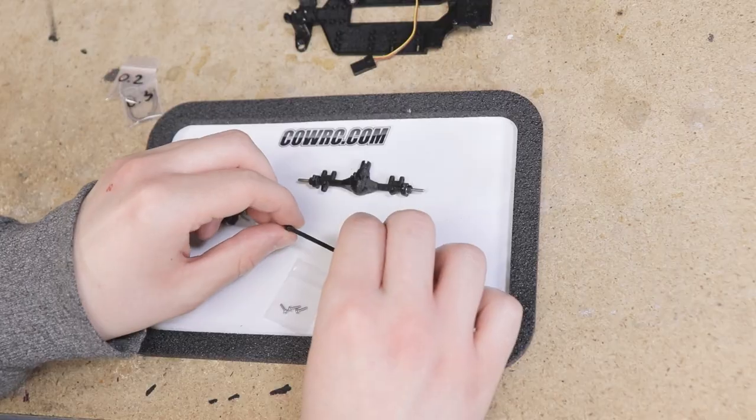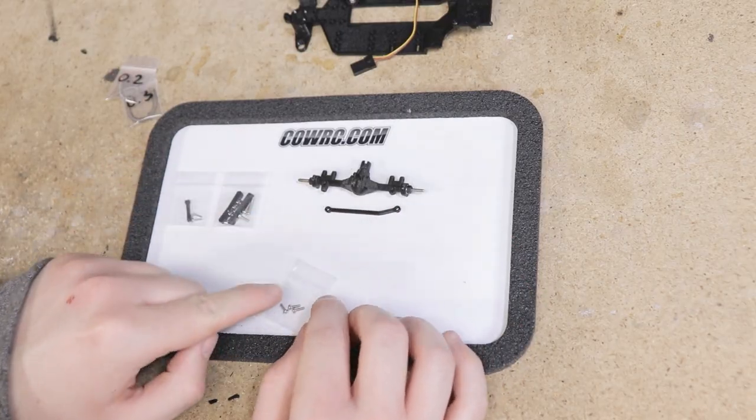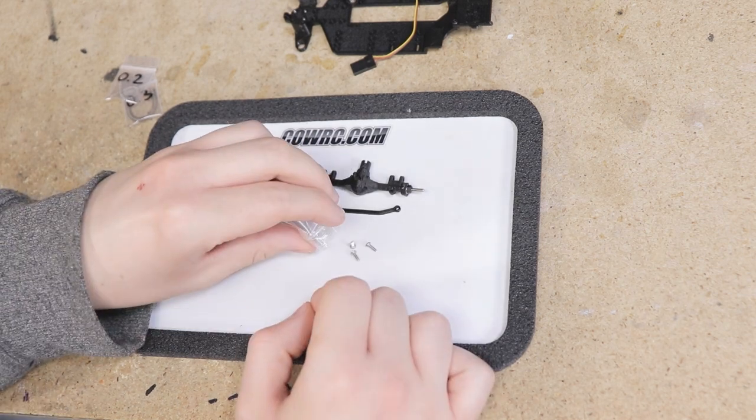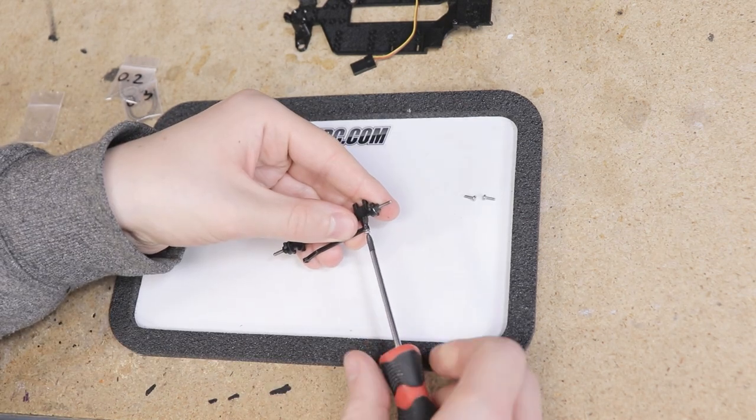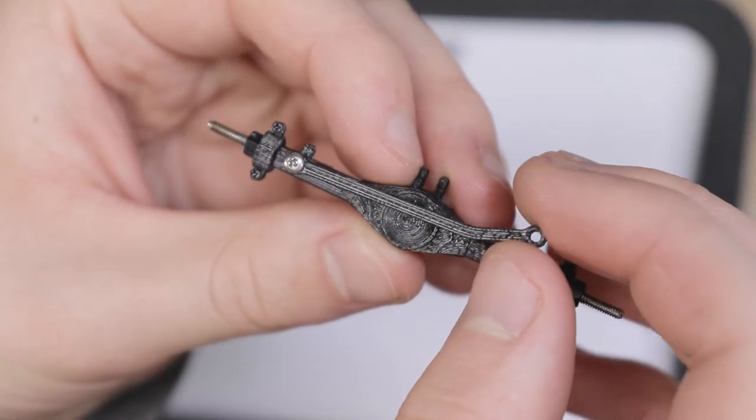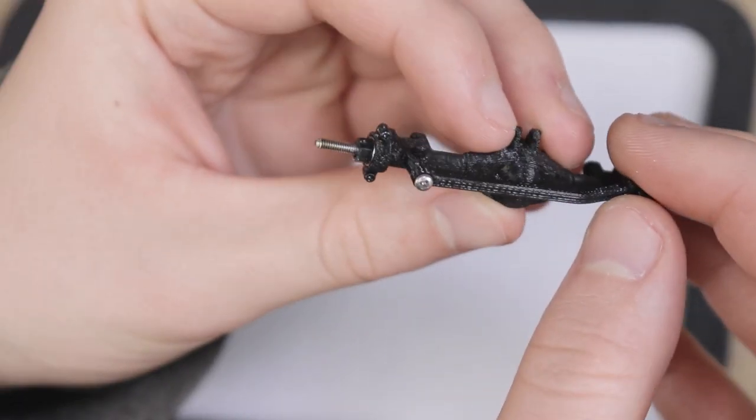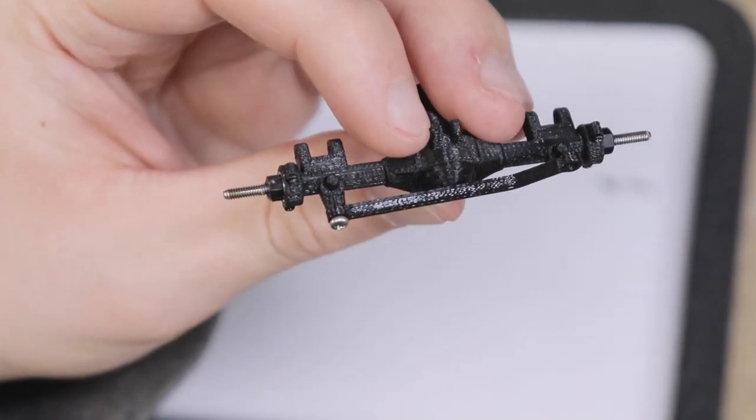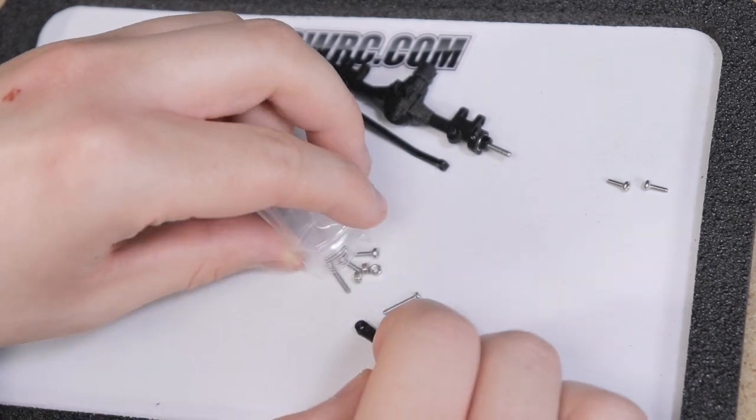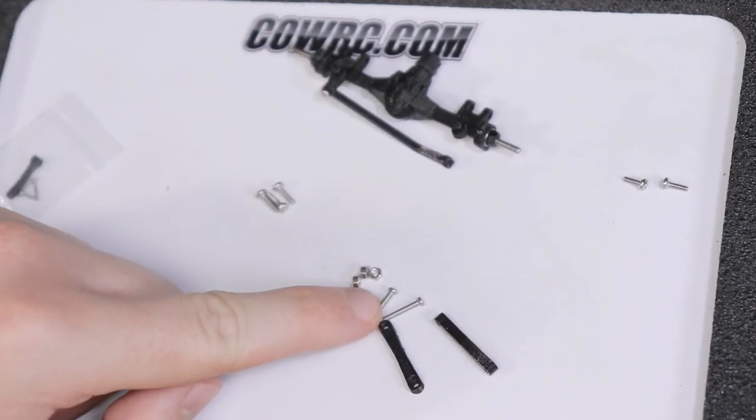Bag two contains all of the rear suspension links and parts that will secure the rear axle to the chassis. We can start by securing the panhard bar to the axle using the M1.6 hardware included in this bag which is the only bag to contain only hardware. Make sure your panhard bar is oriented just like mine is here and also be sure not to over tighten the screw so the panhard bar can move easily.